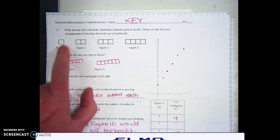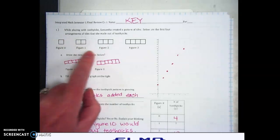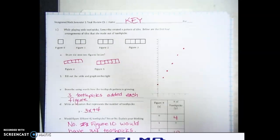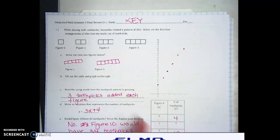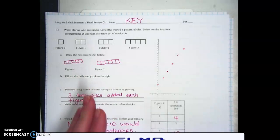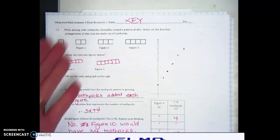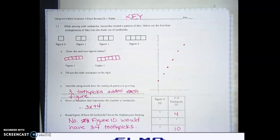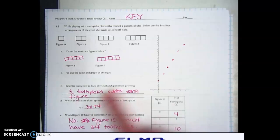So figure zero actually has four toothpicks. Figure one has seven, and if you fill in the chart over here you'll see that it's increasing by three. If you're just counting tiles, it's increasing by one tile, but if you're counting by toothpicks, you're going to add three each time, and when you graph it you're going to get a straight line.